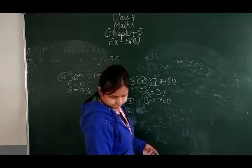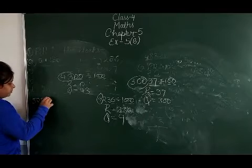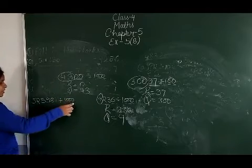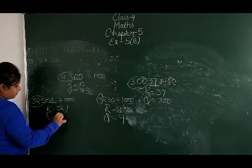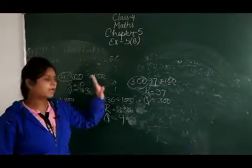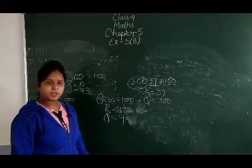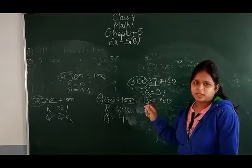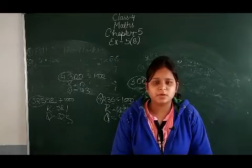Next: 3,25,981 divided by 1000. Dividing by 1000, the last 3 digits become the remainder and the remaining digits become the quotient. The rule is: however many zeros the divisor has, that many last digits of the dividend become the remainder, and the rest become the quotient. This property applies when dividing by 10, 100, or 1000.